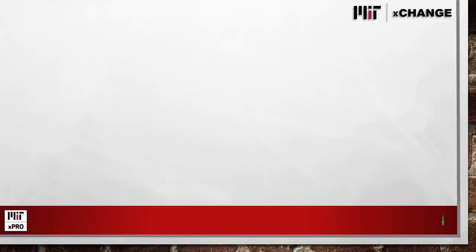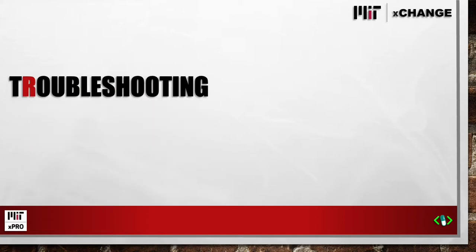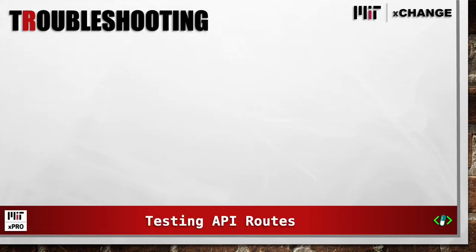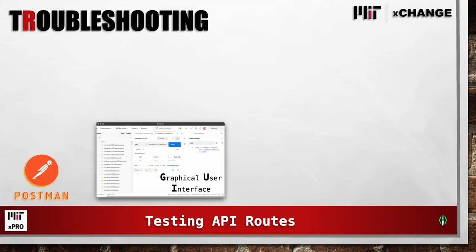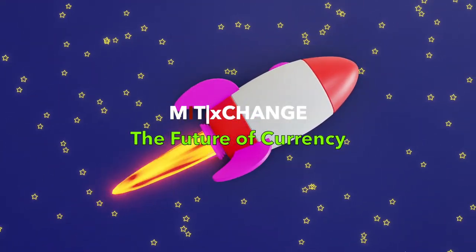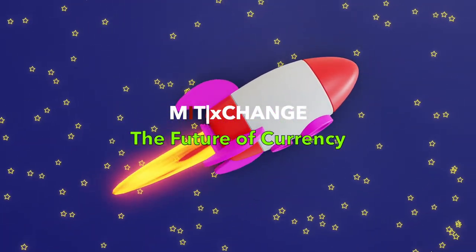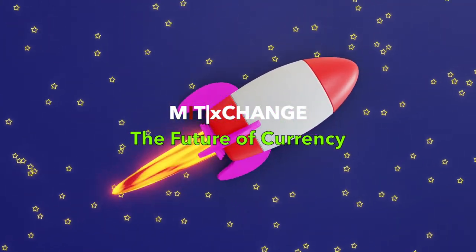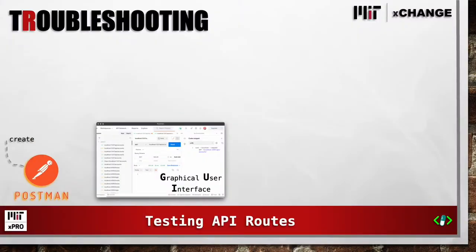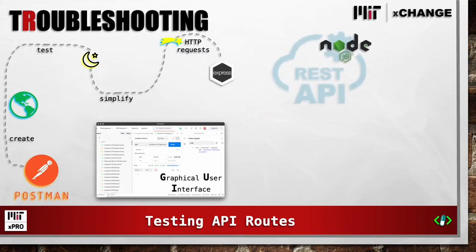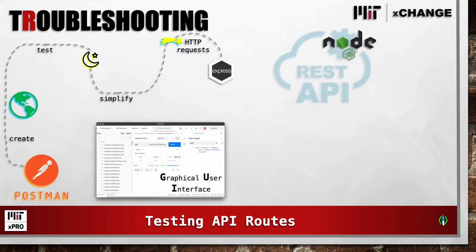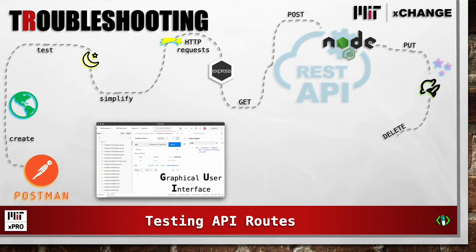While developing the Exchange, we had to do a lot of troubleshooting and testing of API routes. Here we used Postman, which is a graphical user interface, to create, test, and simplify HTTP requests to our Express server — like the GET, POST, PUT, and DELETE methods — to communicate with our cloud database.